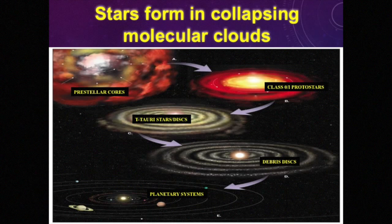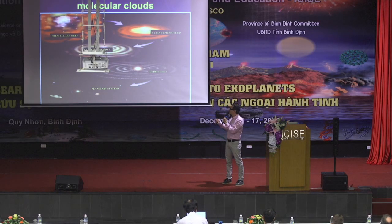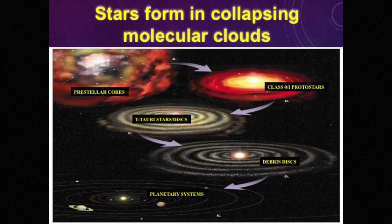First, you have a big molecular cloud, like the ones you heard about this morning, that collapses. And because it has some initial rotation or there is a little bit of turbulence in there, it leads to the formation of a star and a protostellar disk around it. The disk initially is quite thick — you can barely see the star in there. And then the disk slowly dissipates, and eventually you have a planetary system forming.